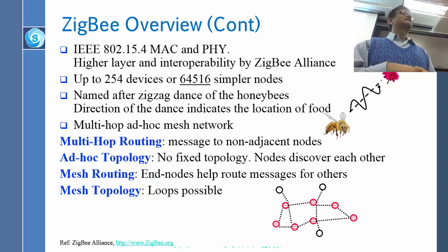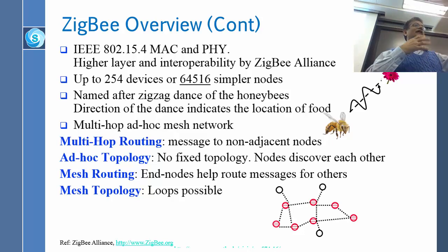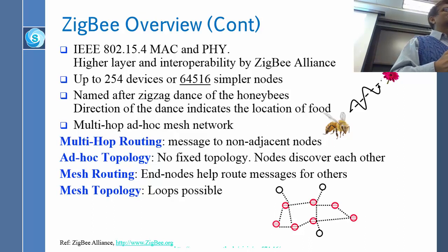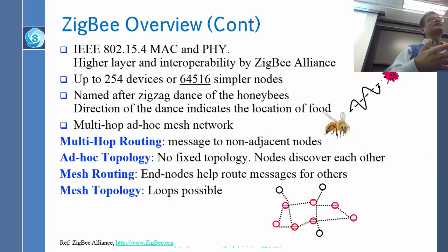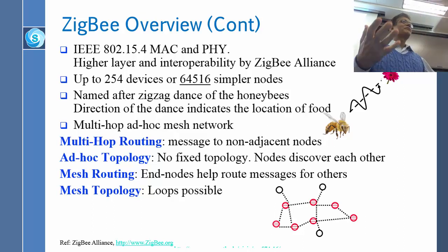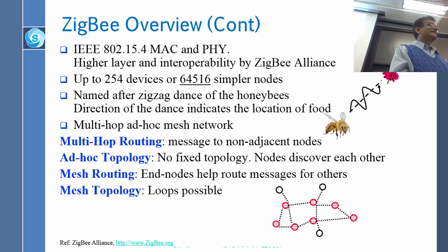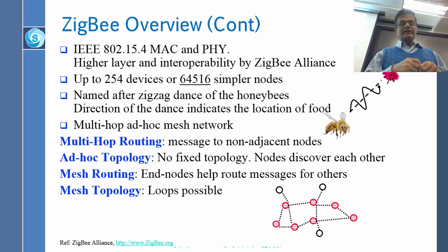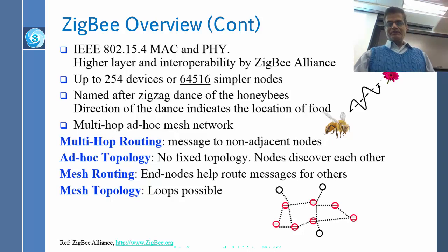Mesh topology is when things are connected not in a tree structure. If we are routers, we don't call it mesh — mesh is when end nodes do the forwarding out of their normal role. So to summarize: mesh routing, mesh topology, ad-hoc topology, and mesh multi-hop routing are the four key terms to understand.